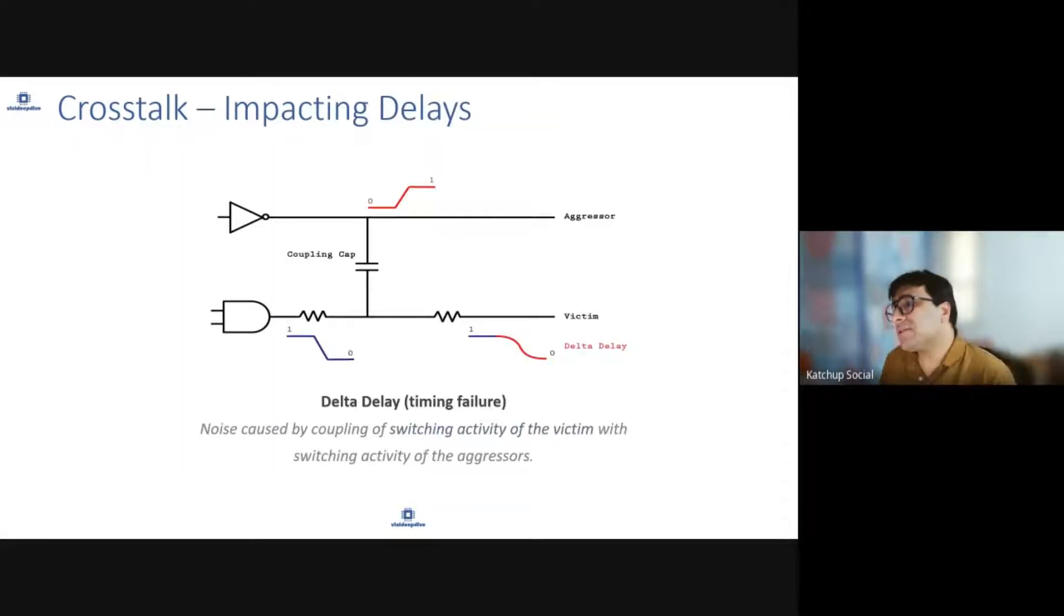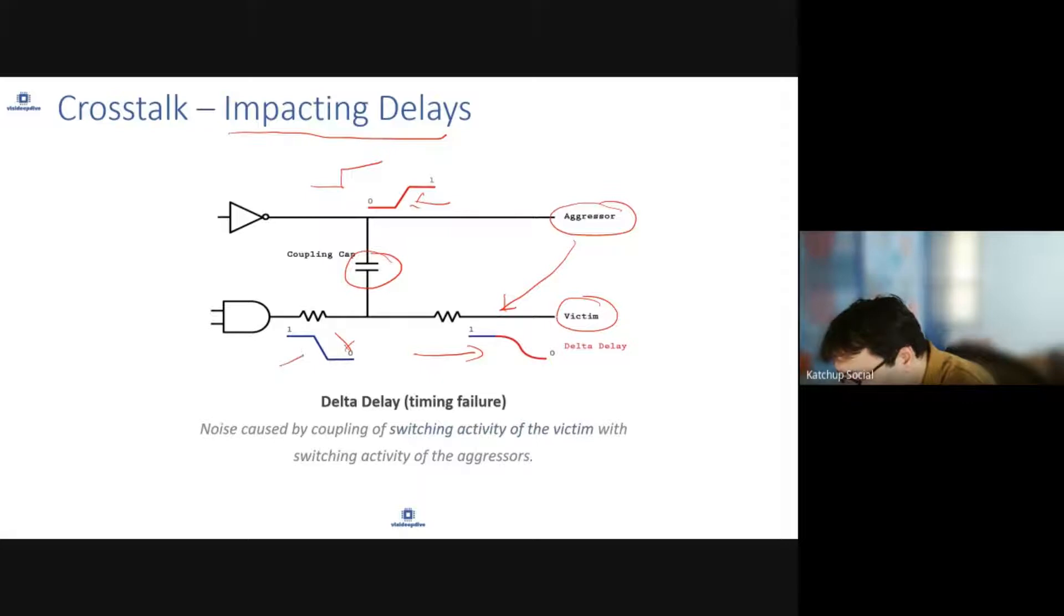What are impacts which happen because of crosstalk? The first impact is it can impact delays. So let's say when a signal is rising and a corresponding signal which is running in a parallel wire is falling, because of this coupling capacitance, this signal—let's say it's known as aggressor—the signal which is changing and impacting another signal, which is called as victim, this coupling capacitance can delay or slow down the change which is happening on this signal. So there is a delta delay or a slow delay which happens because of this coupling capacitance, also known as noise.